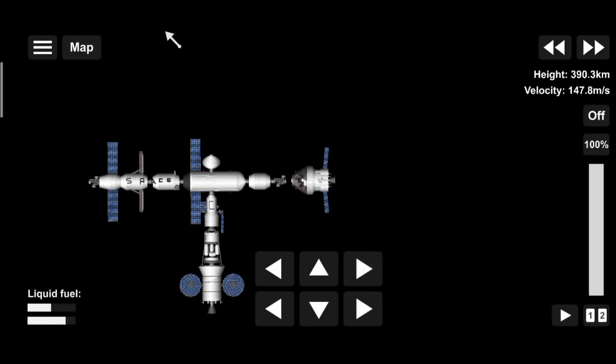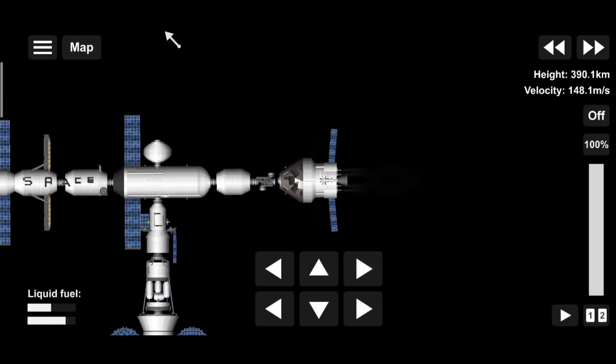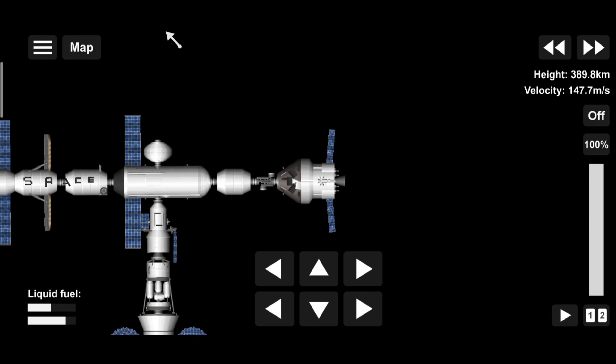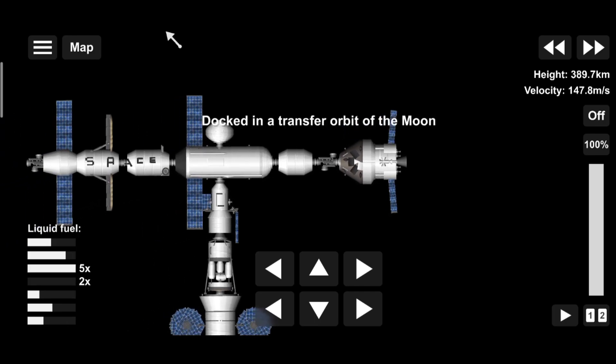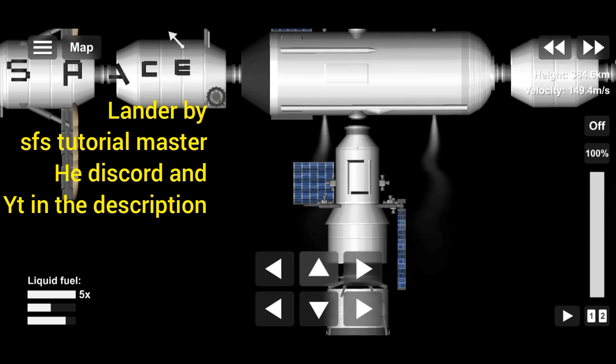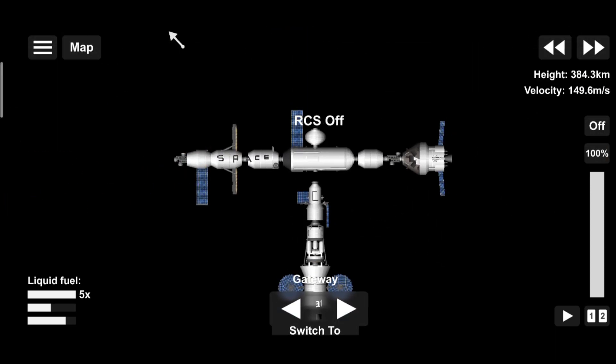Returning to our crew as they approach Gateway, the Orion must match the elliptical orbit of the station in order to successfully dock. Once on board, pre-selected crew members transfer to the lunar lander, while those assigned to Gateway remain on station.